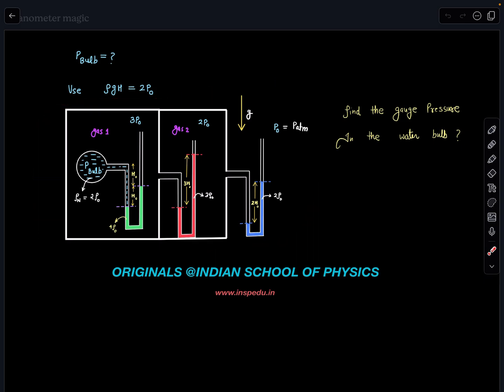We have to calculate pressure inside this bulb and this conversion we have to use. By the way, h naught and h all are the same, so just be careful here. And p naught is given as p atm. So we have to calculate the pressure in the bulb and gauge pressure in the water bulb.